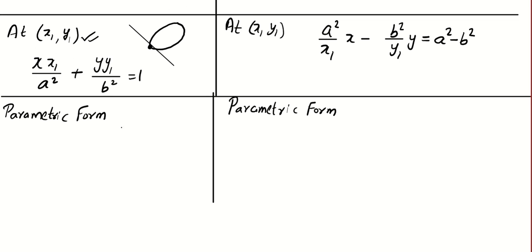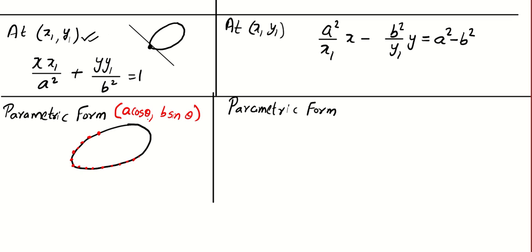Now understand what we mean by parametric form. Parametric form means it represents every point in the system — same concept as a parametric form of a curve. For an ellipse, the parametric form is (a cosθ, b sinθ), where theta varies from 0 to 360 degrees.